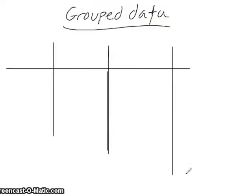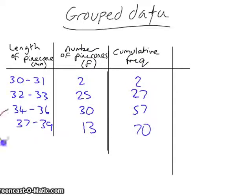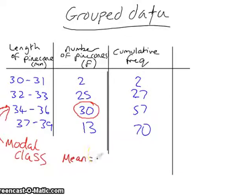We can also work out the mean, median, and mode of group data. We work out the mode by seeing which class has the highest frequency, which in this case means the modal class is 34 to 36 pinecones.